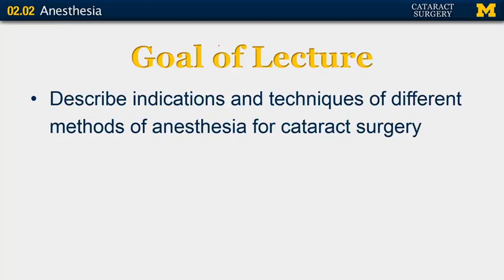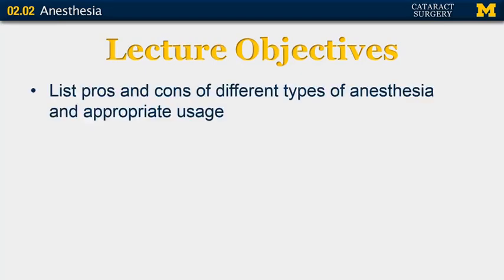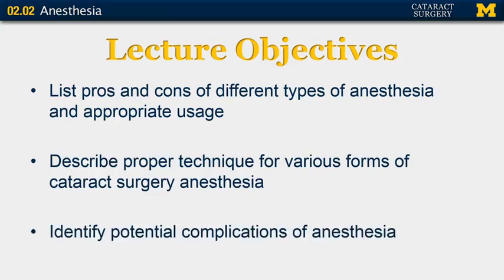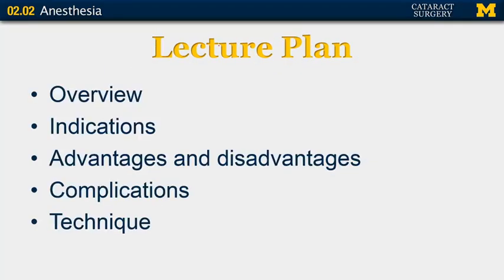The goal of this lecture is to describe the indications and techniques of different methods of anesthesia for cataract surgery. By the end of this lecture, you should be able to list the pros and cons of different types of anesthesia and appropriate usage, describe proper technique for various forms of cataract surgery anesthesia, and identify potential complications of anesthesia. I will provide a brief overview of all the different types of anesthesia available, then go through them individually discussing indications, advantages and disadvantages, potential complications, and proper technique.